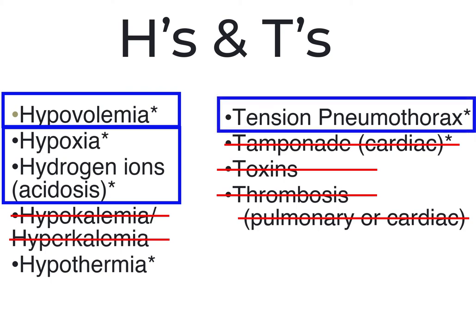Next is tension pneumothorax. In the setting of trauma, this should be suspected and lung sounds should be evaluated along with other pertinent findings. In the setting of cardiac resuscitation, recognize that the trauma of chest compressions or the positive pressure ventilations we provide could also produce a tension pneumothorax. Remember to reassess lung sounds frequently, and if sounds are absent on one side in the setting of PEA, a needle decompression is warranted.